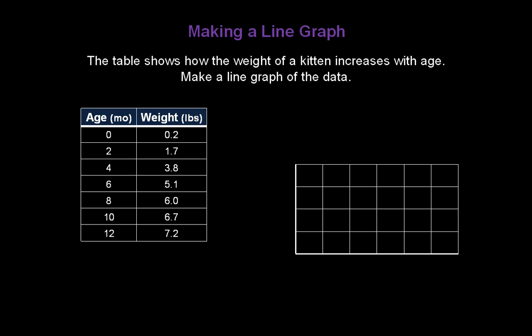Now let's make our own line graph. The table below shows how the weight of a kitten increases with age. We want to make a line graph of the data. The first thing you should do is make sure you understand the data you have to graph in the table. The very first column shows the age of the kitten in months while the second column shows the weight of the kitten in pounds. The first column of data are normally plotted along the horizontal or x-axis. The second column of data are normally plotted along the vertical or y-axis.